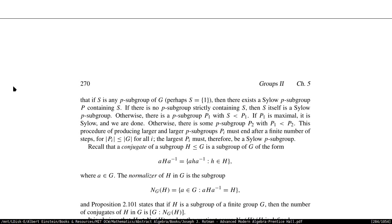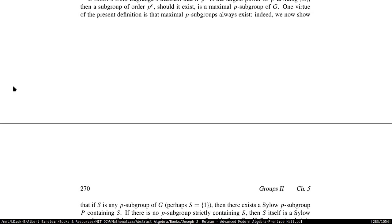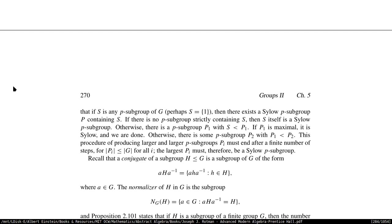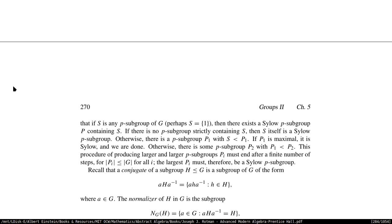If there is no P-subgroup strictly containing S, then S itself is going to be the Sylow P-subgroup; otherwise you're going to have a P-subgroup that contains S. If you can show there is a P-subgroup containing S, and that subgroup is maximal, then it's going to be Sylow. That's how we think about P-subgroups and how they're going to be Sylow P-subgroups.